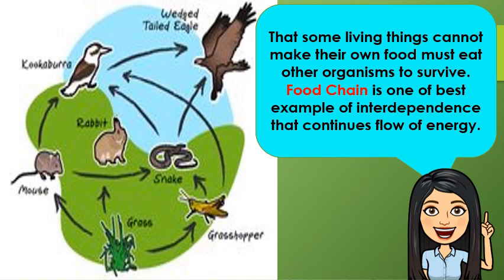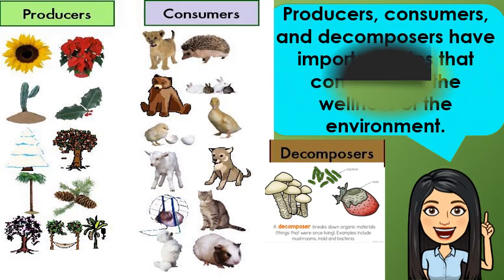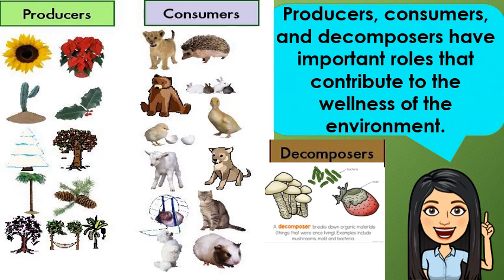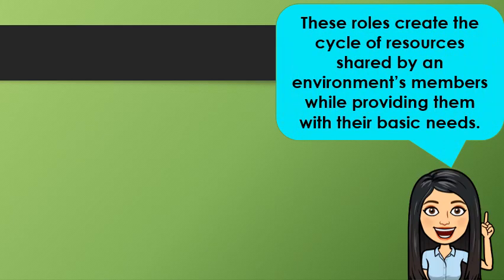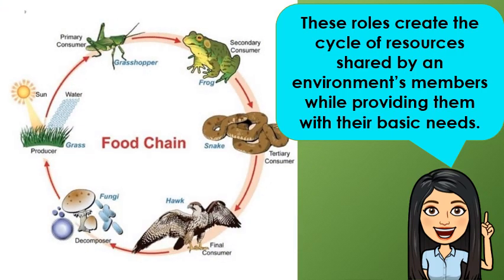This is an example of a food chain. In a food chain, we have the producers, consumers, and decomposers. Producers, consumers, and decomposers have important roles that contribute to the wellness of the environment. These roles create a cycle of resources shared by environment members while providing them with their basic needs. As you can see, we have the producer, which is the grass, then the primary consumer, secondary consumer, tertiary consumer, and final consumer. At the end of the food chain, we have the decomposers. It is a cycle.